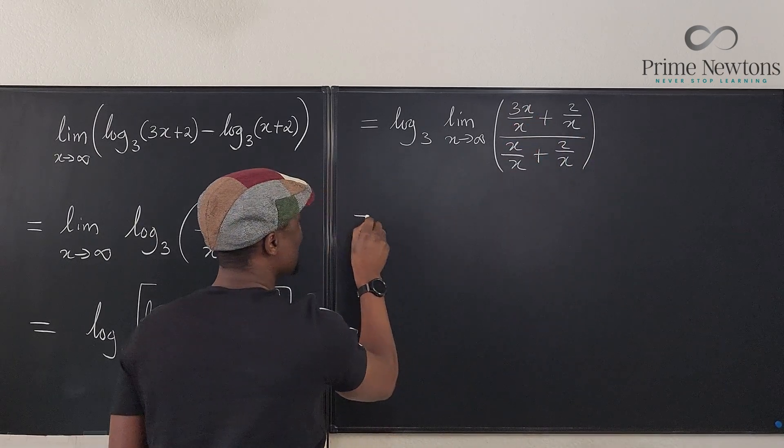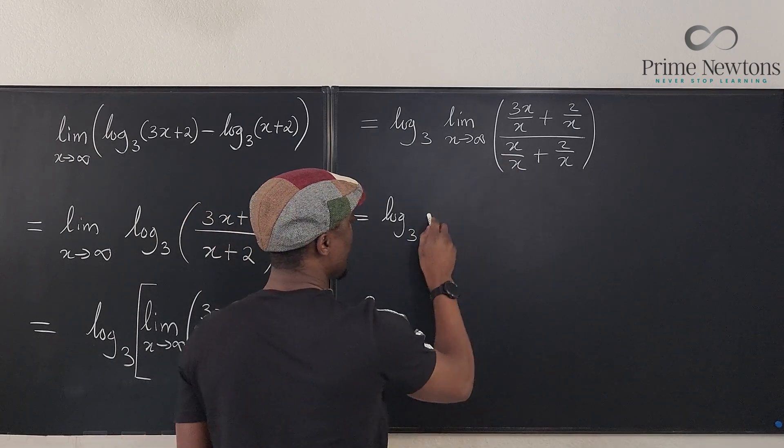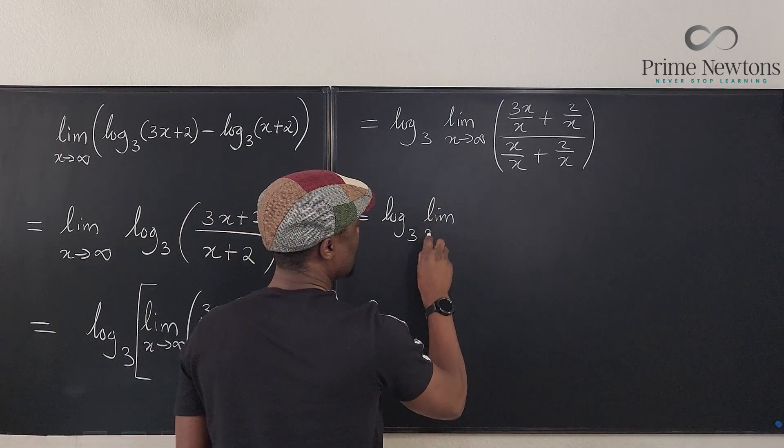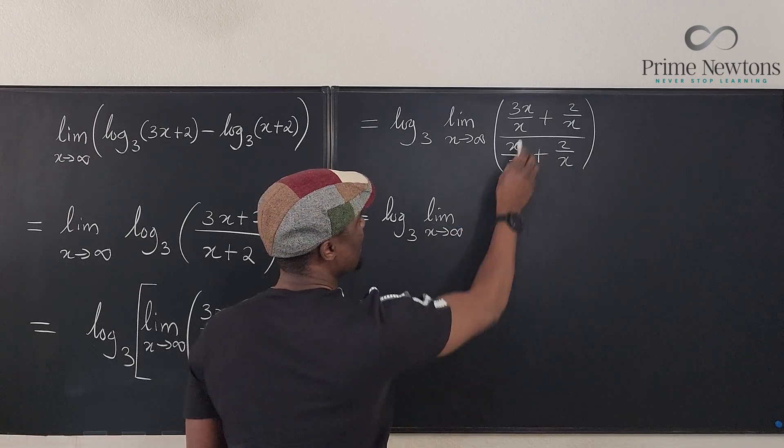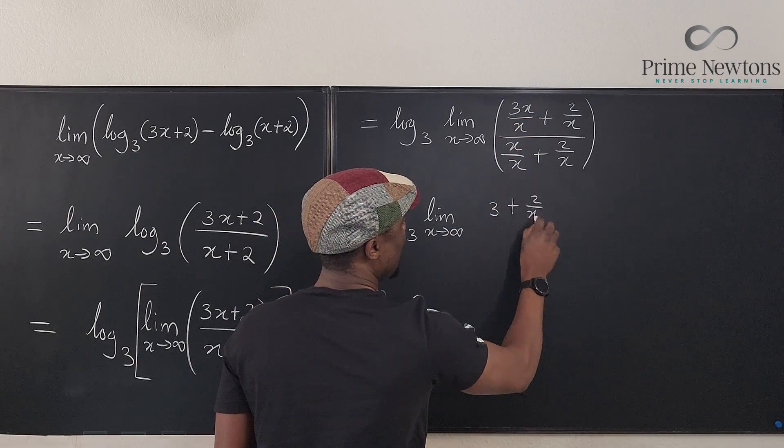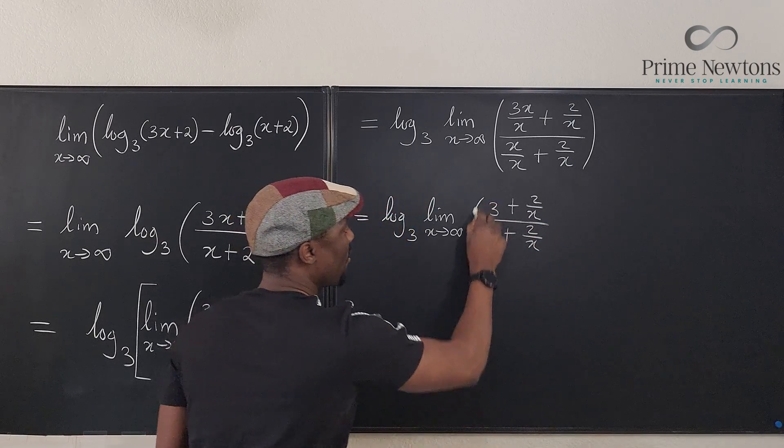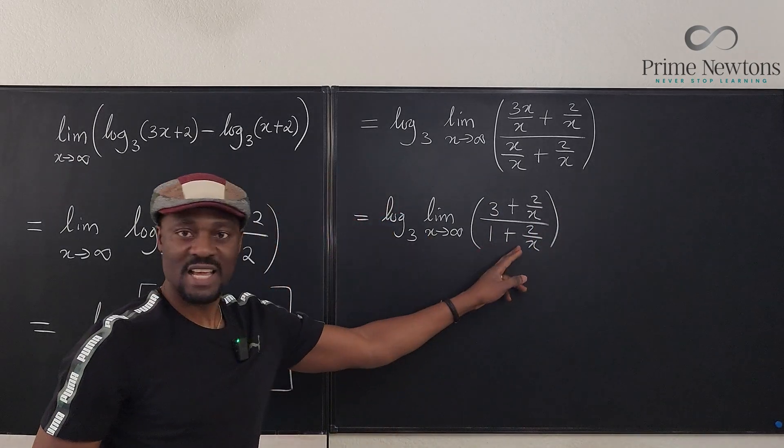You notice that if you simplify, this is the logarithm to base three of, this is now equal to the limit as x goes to infinity of, this expression here is 3 plus 2 over x divided by 1 plus 2 over x. Now, we can easily take this limit.